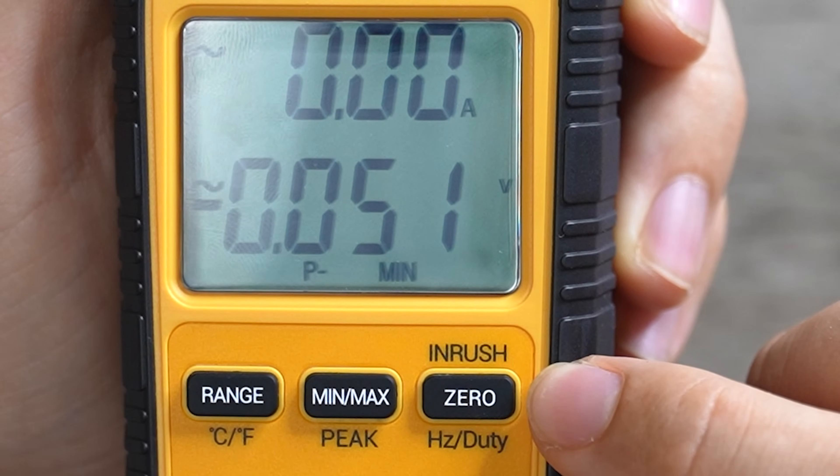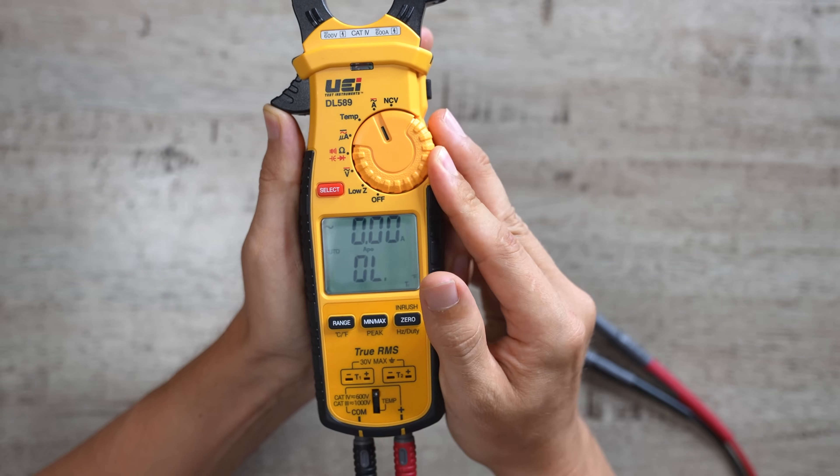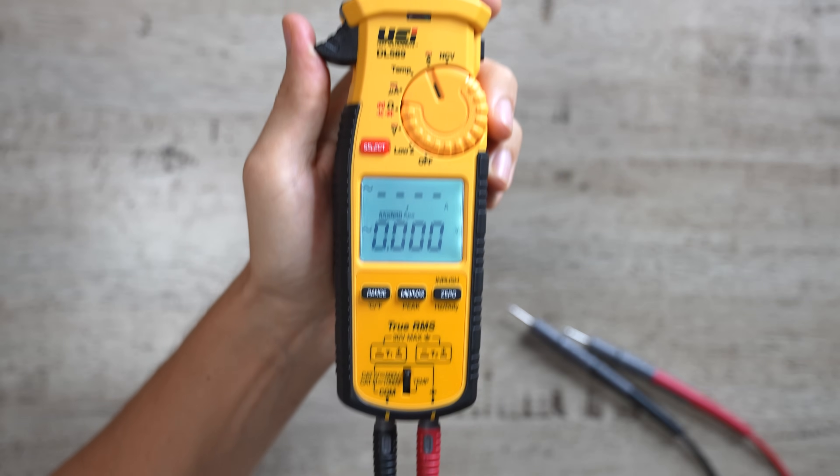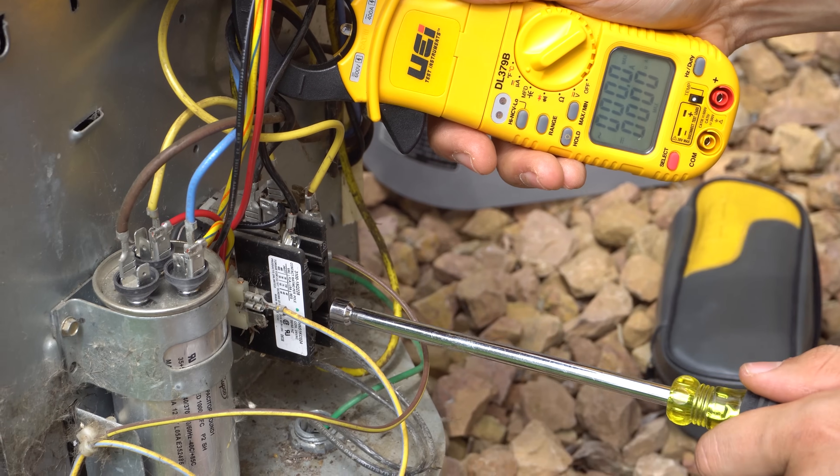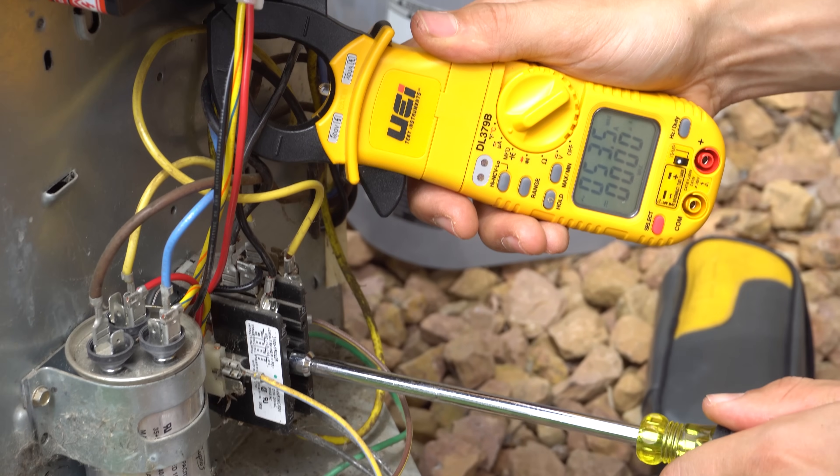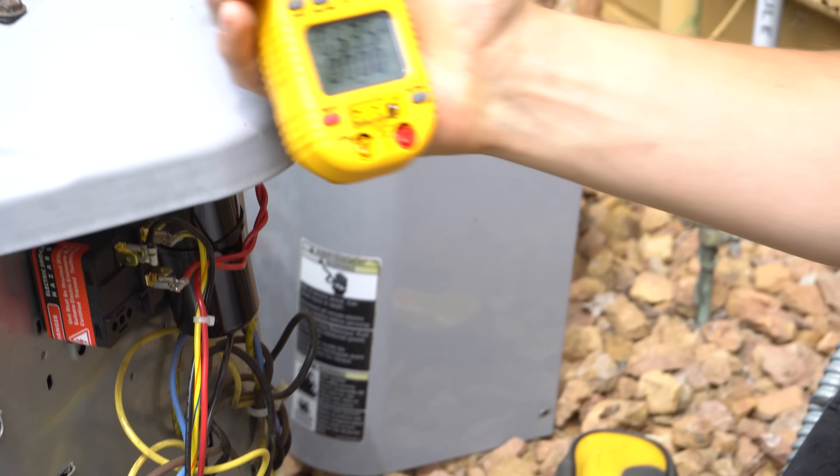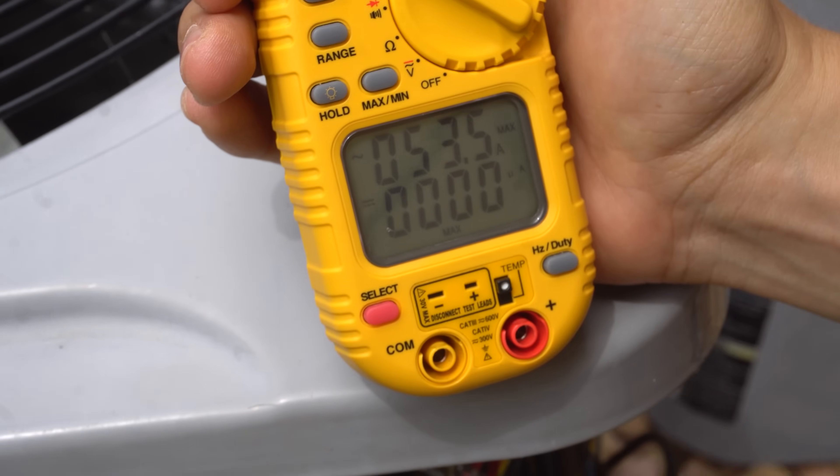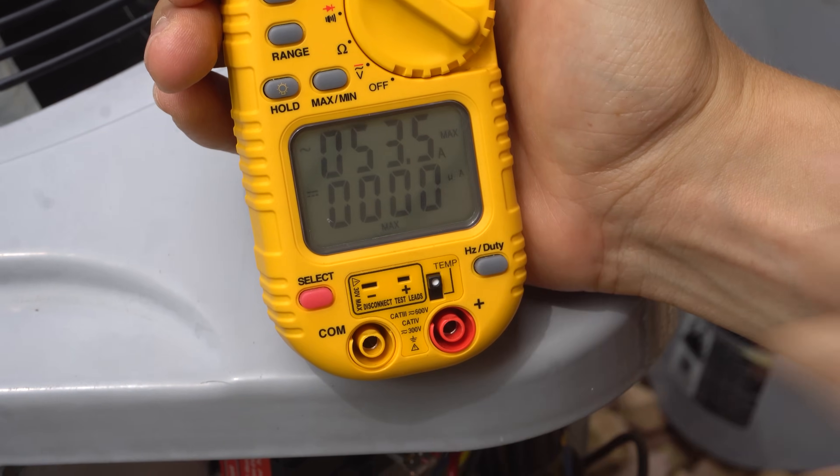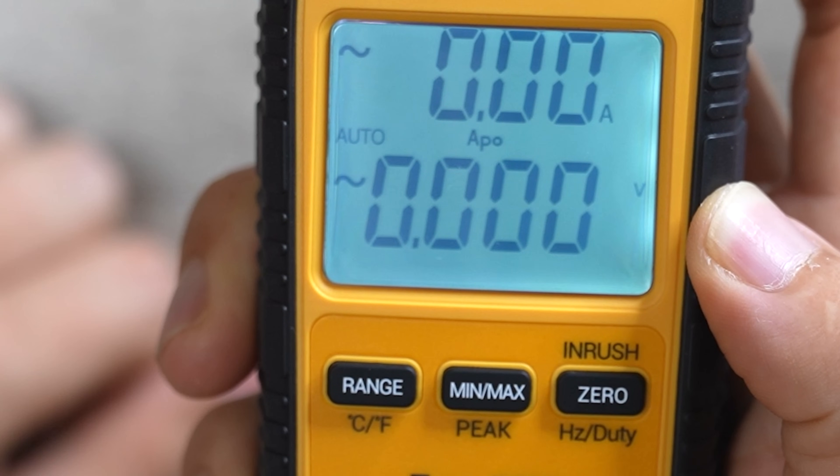Next up, we have inrush current, which can only be used when the meter is set to the amp setting. The inrush option would be used to check amperage when motors start up, because when a motor is starting, it draws a lot more amps than it usually does while it's running. So if you're measuring amperage and your meter is set to inrush, your meter is going to catch the highest spike in amperage right when that motor is starting up. This test is useful to see if a motor or compressor is drawing locked rotor amps.